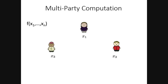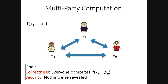What is multi-party computation? We have some parties with inputs x1, x2, x3. They want to compute some function f over these inputs. They want to do this by running a protocol together such that you have correctness — every party gets the output — and security — nothing else about the inputs is revealed. I'm thinking about an arbitrary number of corruptions in this setting.